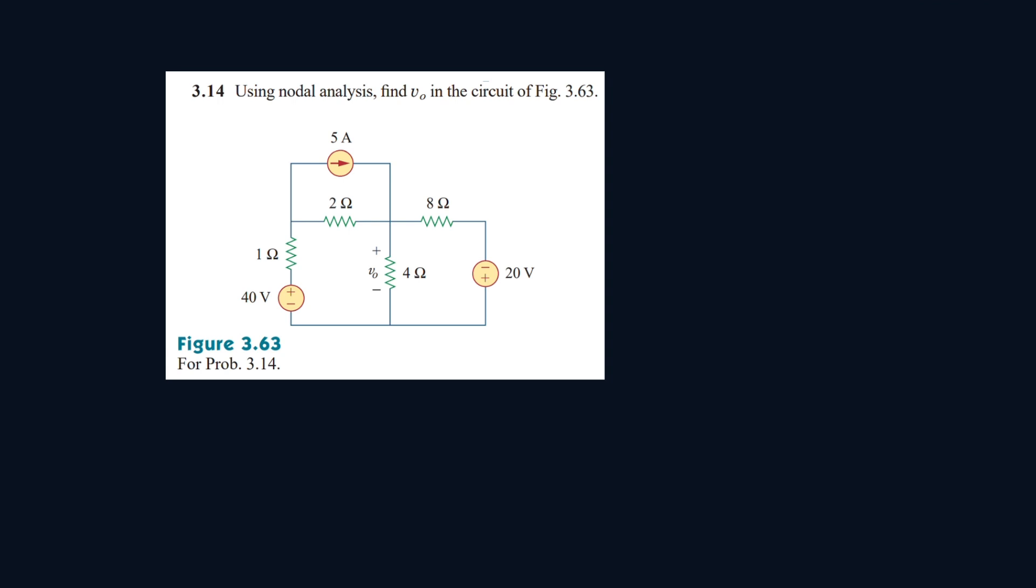Alright, so we have this following circuit to solve for. We have to find V0 here. So let's start by writing two nodes. Let's call this V1 and let's call this V2.